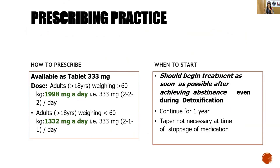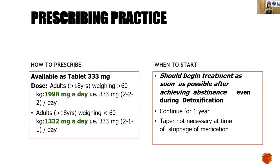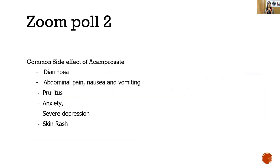For patients under 60 kg, give two tablets morning, one afternoon, one evening — total 1332 mg. Treatment should begin as soon as possible after achieving abstinence, even during detoxification, and should be continued for six months to one year. Tapering is not necessary when stopping acamprosate — there is no evidence of withdrawal with acamprosate discontinuation.